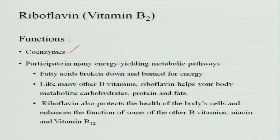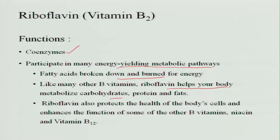The functions of riboflavin: just like thiamine, it acts as a coenzyme for metabolism. It participates in many energy-yielding metabolic pathways, like the breakdown of fatty acids to energy. Like many other B vitamins, riboflavin helps the body metabolize carbohydrates, proteins, and fat. Riboflavin also protects the health of body cells and enhances the function of other B vitamins such as niacin and vitamin B12.